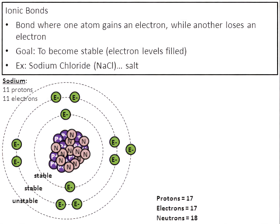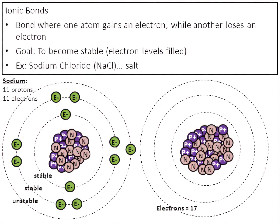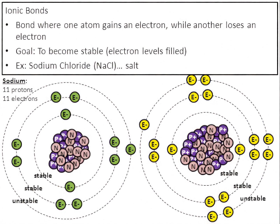Let's draw the chlorine atom — 17 protons and 18 neutrons in the nucleus. Drawing three levels for 17 electrons: two in level one — it's filled and stable. Eight in level two — that leaves seven to account for. All seven go in level three, but level three is not filled and not stable. Level one is stable with two electrons, level two is stable with eight, but level three is unstable — there are only seven electrons, and eight would make it stable.